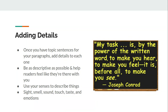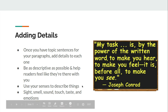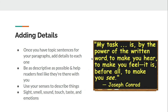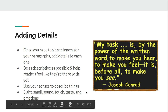Once I have my topic sentences, I need to add details. These topic sentences and details are going to turn into paragraphs for your essay. Start adding some details to each of your topic sentences. You need to be as descriptive as possible and help readers feel like they're right there with you. Use your senses to describe things: sight, smell, sound — tell us how things felt, what they tasted like if you were eating, and use your emotions. We really want to make our readers hear, feel, and see the things we're going through at that time.